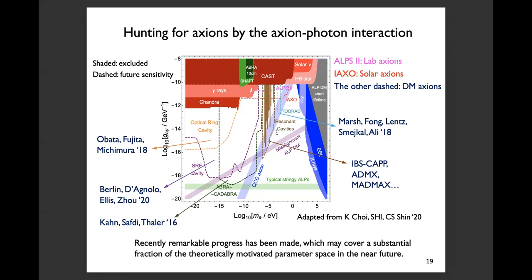This is a summary of the current status and future prospects for hunting axions via the axion-photon interaction. The shaded region is excluded by previous experiments and astrophysical constraints, and the dashed regions correspond to expected sensitivity of future experiments. ALPS2 is trying to see lab axions, IAXO is the next-generation telescope for detecting solar axions, and other dashed regions correspond to experiments targeting dark matter axions. Dark matter axions show much better sensitivity due to their enormous intensity. During the last five years, remarkable progress has been made, and future experiments can cover a substantial fraction of the theoretically motivated QCD axion dark matter parameter space, though the string theory axion parameter space remains very hard to reach.